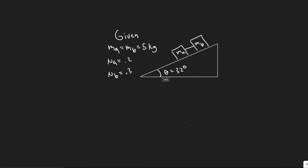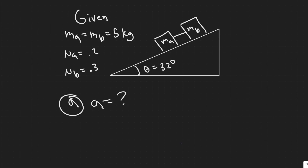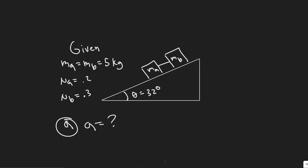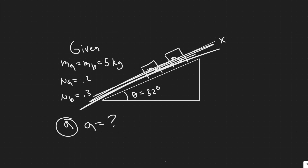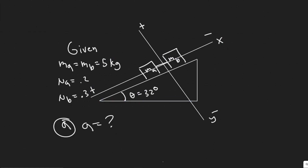We're going to solve for the acceleration of these blocks. Since they're connected, they're going to have the same acceleration down this incline. The way we'll do it is by summing the forces along the x direction. Whenever you do an incline problem like this, you want to label your axes. Parallel to the incline is the x-axis, and perpendicular to that is the y-axis. Down the incline is positive x, up is negative; perpendicular away from the surface is positive y, into it is negative.